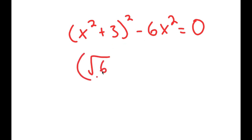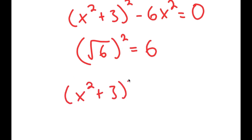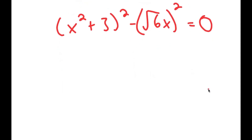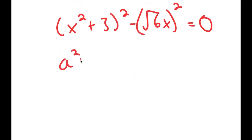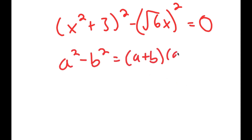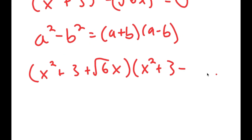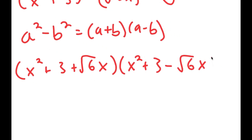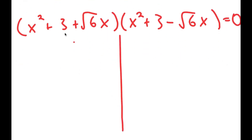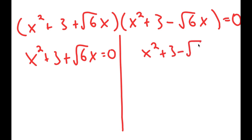Remember that the square root of 6 squared is equal to 6. So what I'm going to do is rewrite this as x squared plus 3 squared minus the square root of 6 times x squared, equal to 0. Now I can use the property a squared minus b squared is equal to a plus b times a minus b. So this turns into x squared plus 3 plus the square root of 6 times x, times x squared plus 3 minus the square root of 6 times x, is equal to 0.